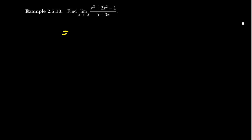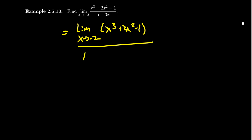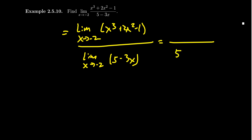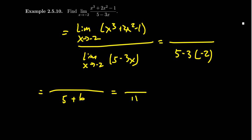Because we have a limit of a quotient, we're going to be looking at the quotient of limits. We'll take the limit as x approaches negative 2 of x cubed plus 2x squared minus 1 over the limit as x approaches negative 2 of 5 minus 3x, so long as the denominator doesn't go to zero. These are just polynomials, and because they're continuous, we can compute their limits by direct substitution. Let's check the denominator first: plugging in negative 2 gives 5 minus 3 times negative 2, which is 5 plus 6, equaling positive 11. So the denominator doesn't go to zero.